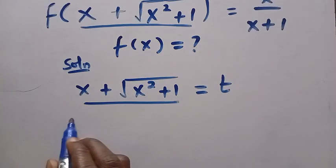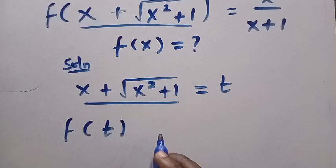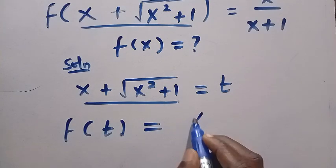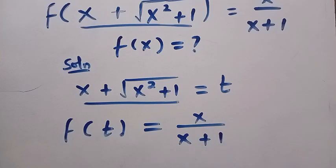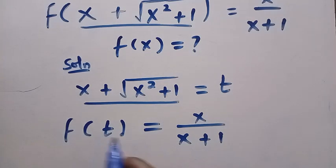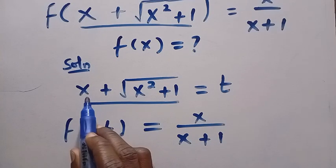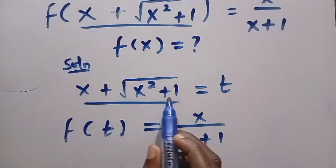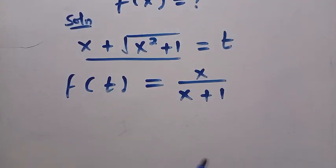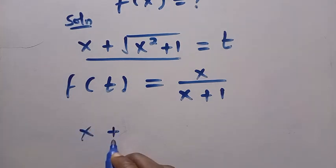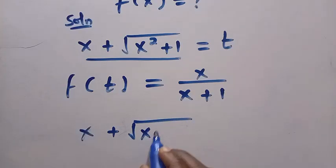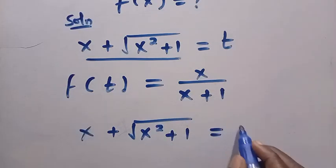Then coming back to this function, we are going to replace everything with t. And our new function becomes f of t equals x divided by x plus 1. But here we have t and here we have x, so this contradicts — we are going to make sure that every single x here is in terms of t. So we come back to where we let x plus root of x squared plus 1 equals t, and we make x the subject of the formula.